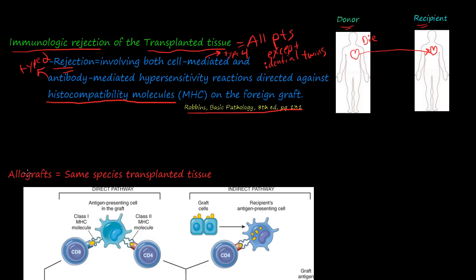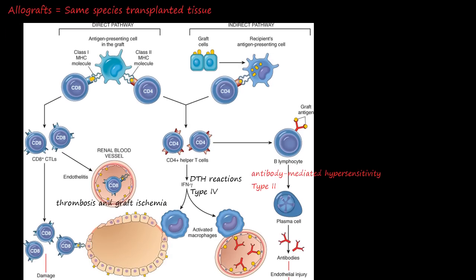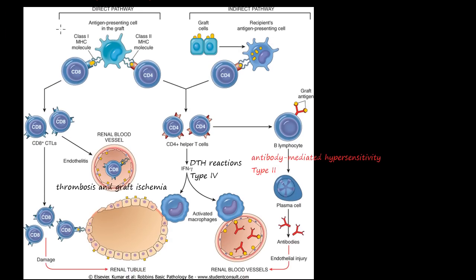Allografts — just a little terminology here — allografts are transplanted tissue from the same species. So in the literature when they say 'allograft,' that just means transplanted tissue of the same species. There are two types of immunological rejection pathways we're going to talk about: the direct pathway and the indirect pathway.